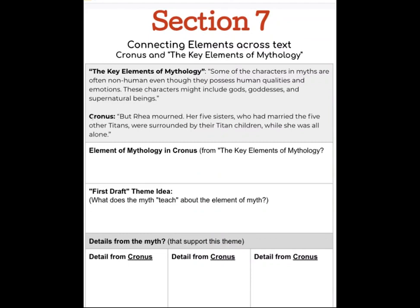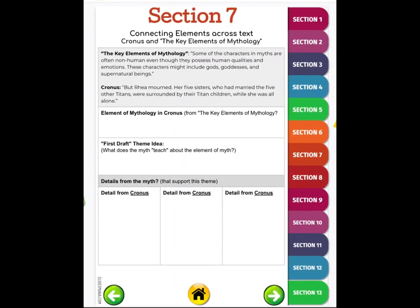We're going to read from Cronus: But Rhea mourned. Her five sisters who had married the five other Titans were surrounded by their Titan children, while she was all alone. Remember that her husband had eaten all of their children. We're trying to find out what is the element from The Key Elements of Mythology that's also in Cronus.